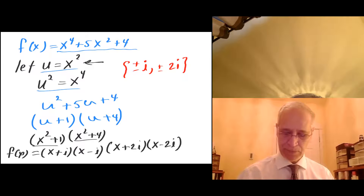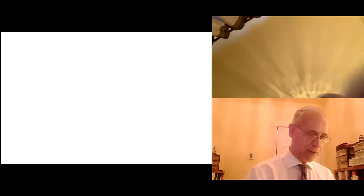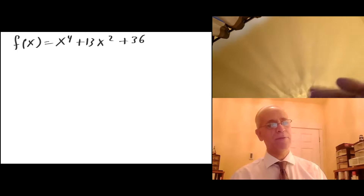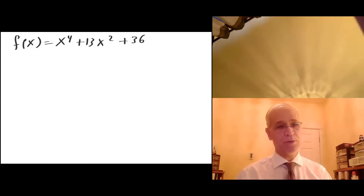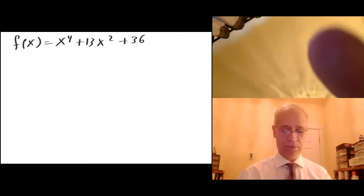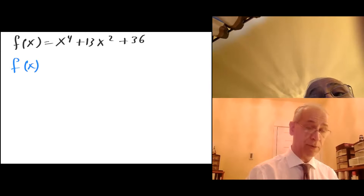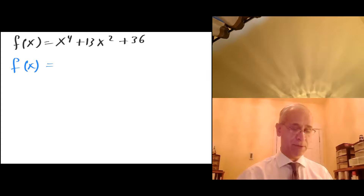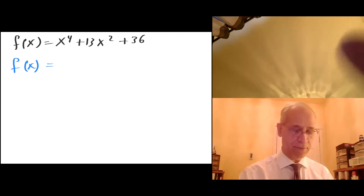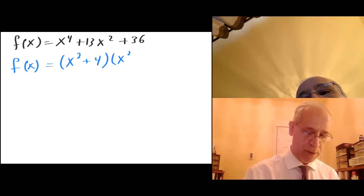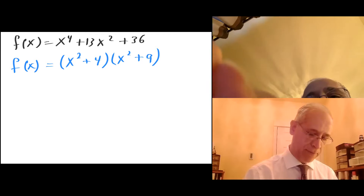Let's do one more example. Suppose we are given f of x equals x to the fourth plus 13x squared plus 36. I'll factor this the shorter way first — without u-substitution. I'm looking for two numbers that add up to 13 and multiply to 36, which is 9 and 4. So f of x equals x squared plus 4 times x squared plus 9.